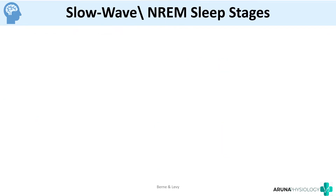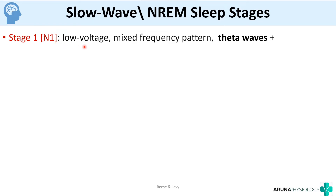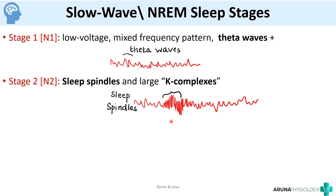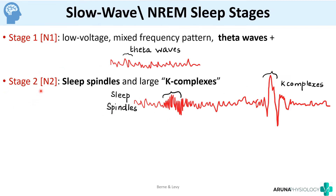Now the EEG changes during each stage: Stage 1, also called N1, basically consists of a mixed frequency pattern — somewhere between alpha and theta waves. When the subject is relaxed we have alpha waves, but when falling into sleep we have theta waves also, so the EEG will have both. In N2, stage 2, we have a particular EEG pattern called sleep spindles and K complexes. Sleep spindles are high amplitude, high frequency activity, and a biphasic wave pattern is called the K complex. Sleep spindles and K complex occur in stage 2 of sleep.